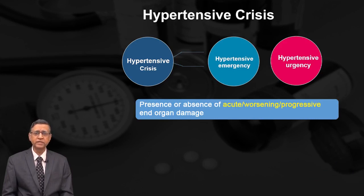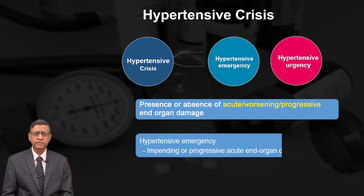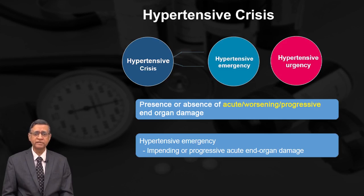Those words are very important because chronic end organ damage does not indicate hypertensive emergency. For example, a patient with chronic kidney disease presenting with high BP is not a hypertensive emergency. You have to demonstrate evidence of acute worsening progressive end organ damage. Hypertensive emergency is the situation where you have impending or progressive acute end organ damage.